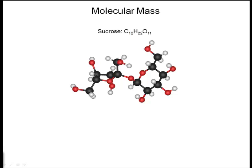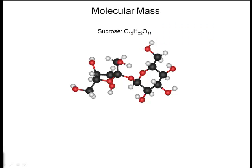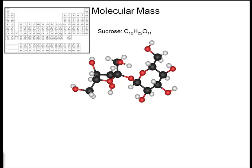Molecular mass is the mass of one molecule of a substance, like sucrose, shown here. In order to find the mass, you need a couple of things: you need the chemical formula, shown at the top, which tells you how many of which atoms are in the molecule, and you also need the atomic masses of those atoms, which can be found on the periodic table.